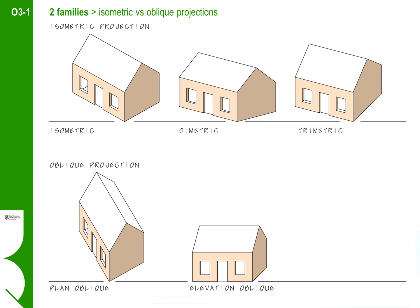There are two main families of parallel or axonometric projections. The first are isometric projections, which contain three variations: pure isometric, diametric, and trimetric projections. The other family are the oblique views. These are a bit more abstract looking than isometric projections, but are easier to construct and very good for explaining things diagrammatically, which is why oblique views are used quite a lot.